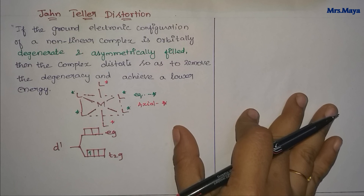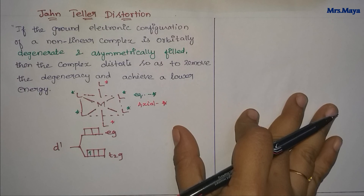If you ask questions about PGT-RB, you will ask questions about coordination chemistry — how to find the oxidation state, how to find the weak field, how to find the strong field, how to find the d-orbital splitting and crystal field theory, how to find the high-spin and low-spin.